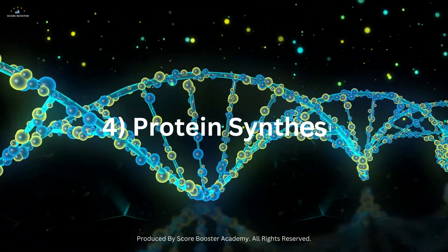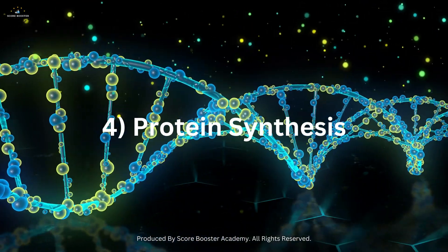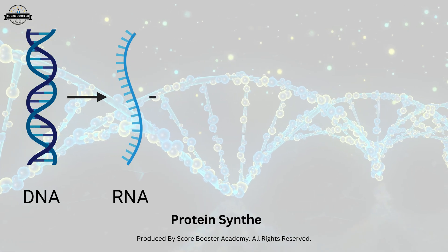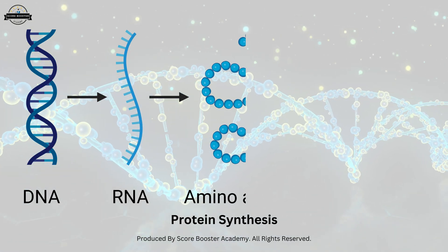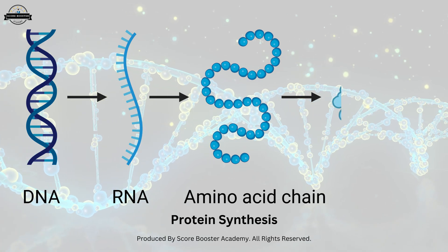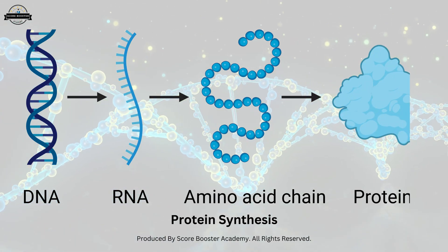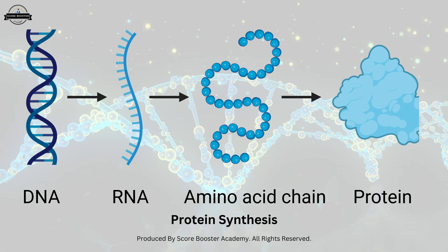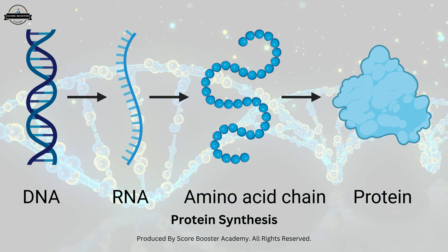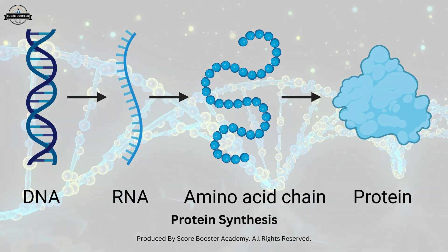Protein synthesis. Translation is the final step in protein synthesis. The mRNA is decoded by ribosomes, and transfer RNA molecules bring the correct amino acids to form the growing protein chain. This sequence of amino acids determines the type and function of the protein being produced, which is essential for various cellular processes.